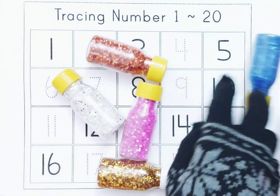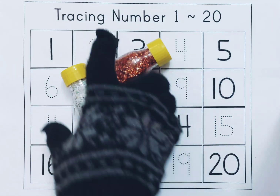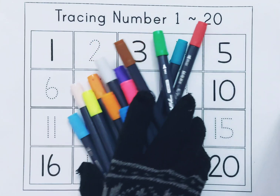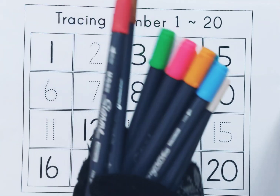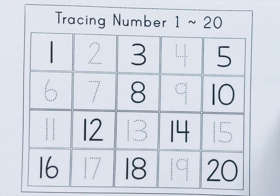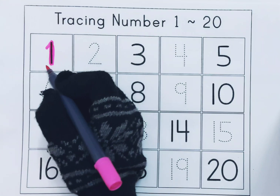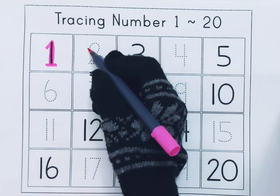Learn Counting. This is 1, O N E, 1. This is 2, T W O, 2.